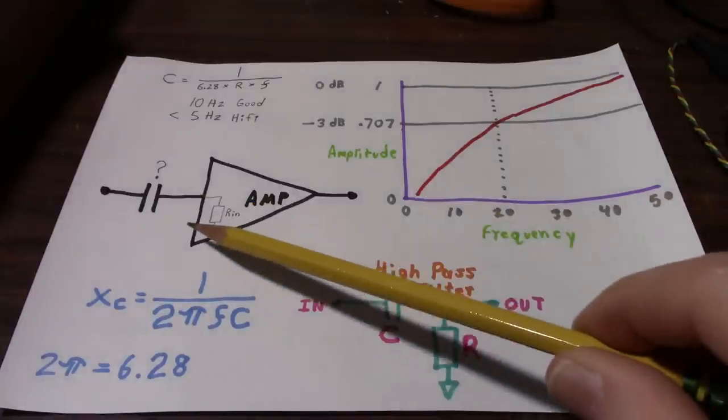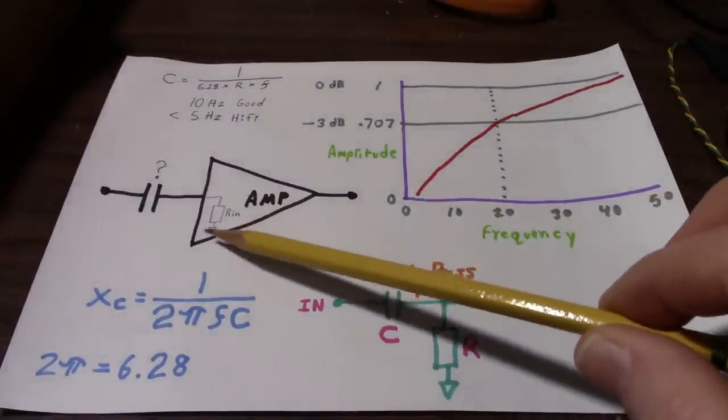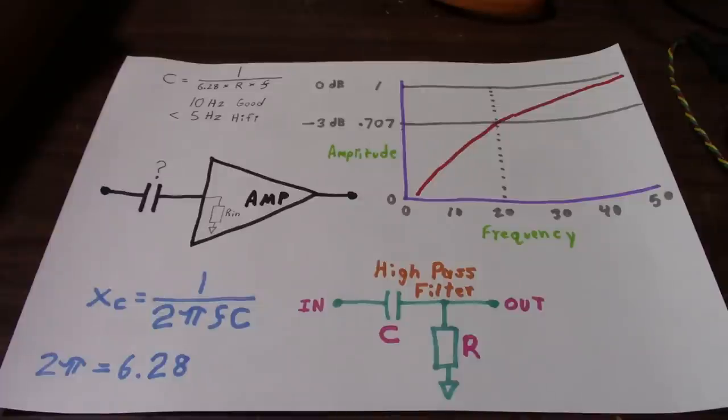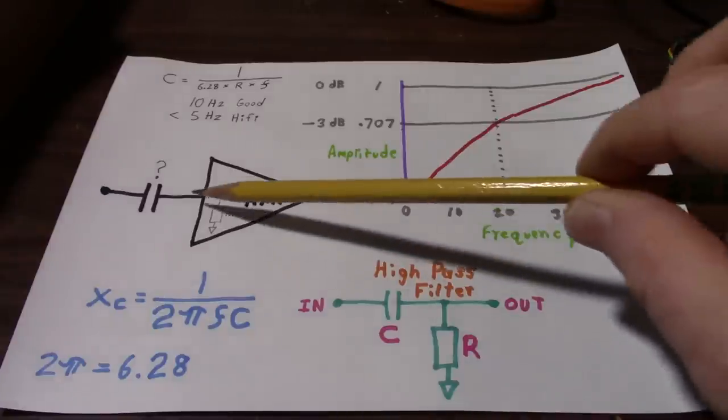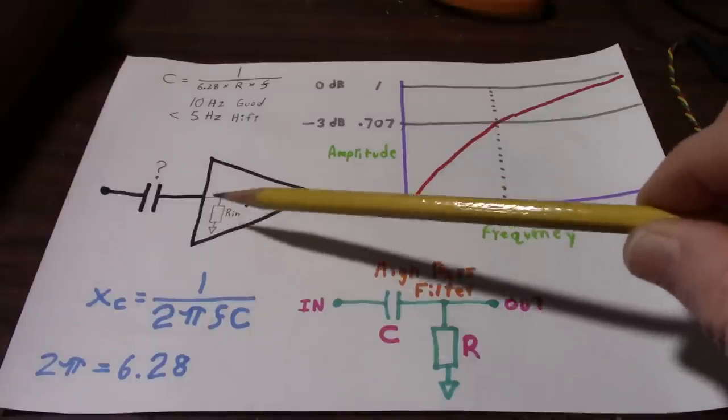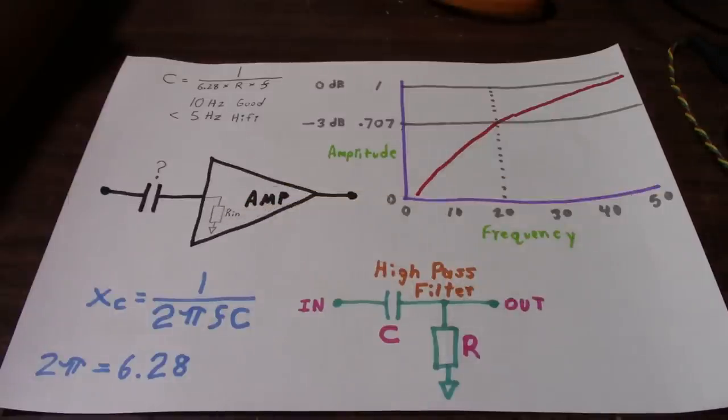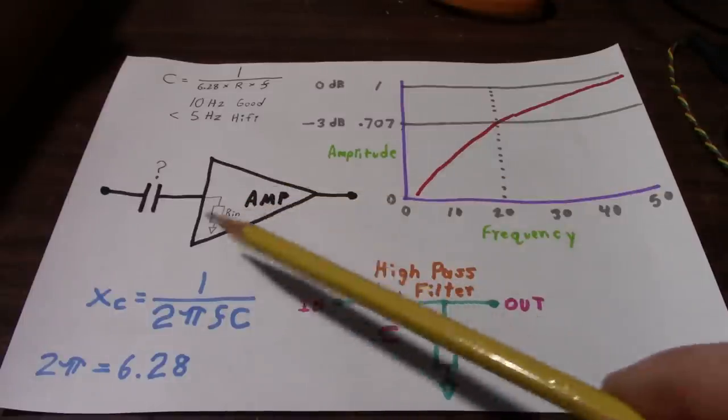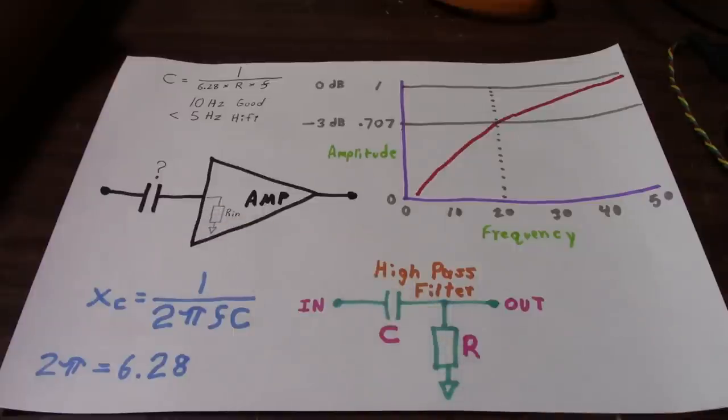Inside the amplifier, there'll be some, usually resistors that bias the input stage, and those will dominate what the input impedance or input resistance of the amplifier is. Most chip amp data sheets will show the input resistance or impedance, whatever they call it, on that particular data sheet.